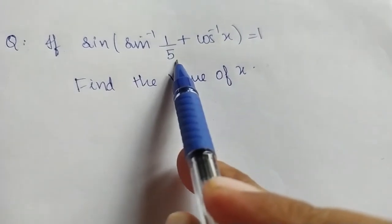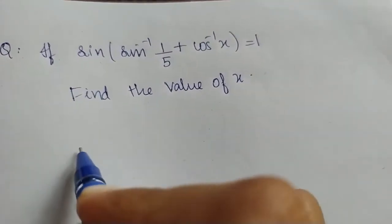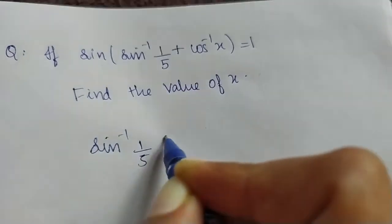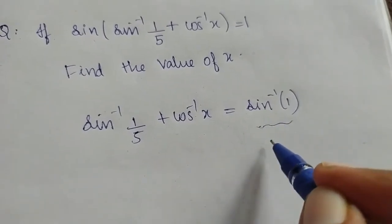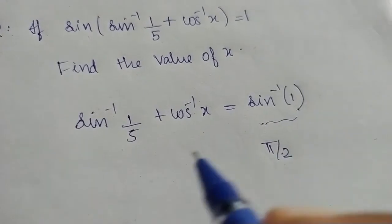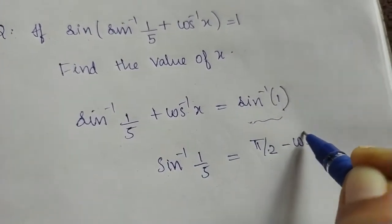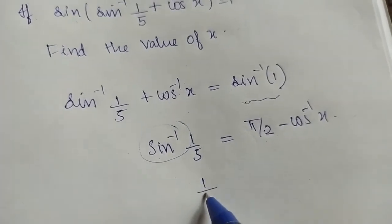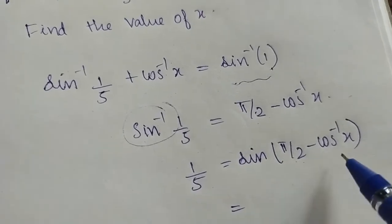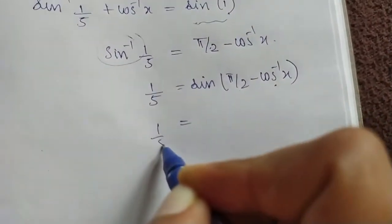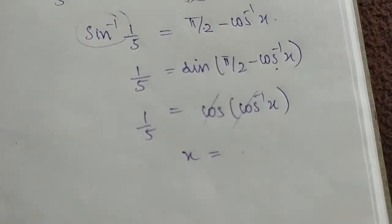Example: if sin inverse x + cos inverse x = 1, find x. Since sin inverse 1 = π/2 and sin(π/2) = 1, we get sin inverse x = sin inverse 1, so x = 1. We verify using the property sin inverse x = π/2 − cos inverse x. Then sin(π/2 − cos inverse x) = cos(cos inverse x) = x = 1/5. So x = 1/5.